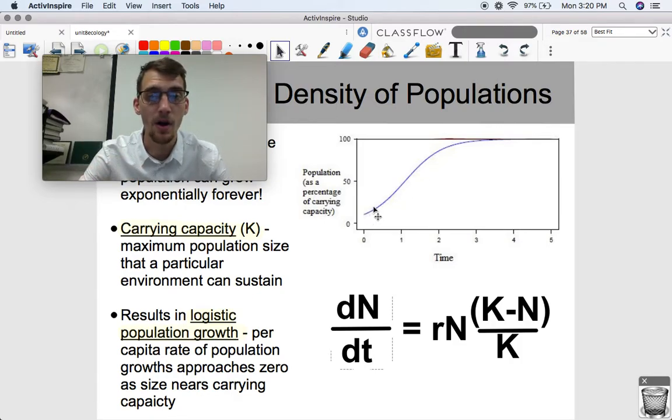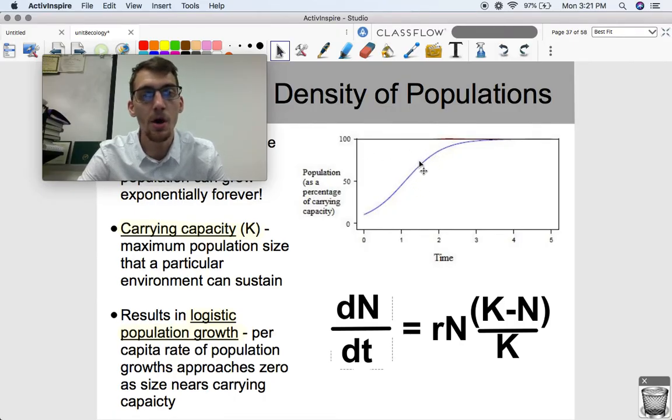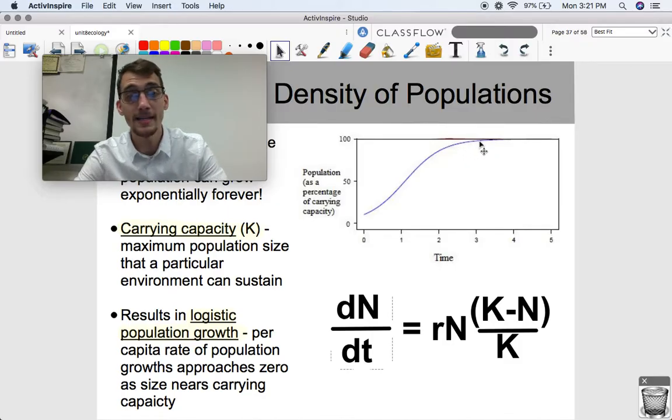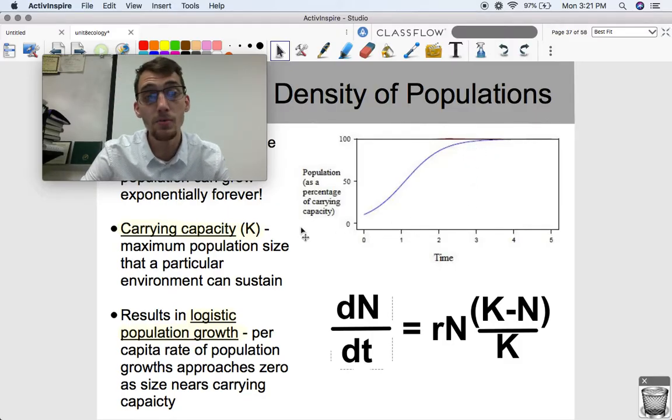So as we can see, it starts to grow really fast, maybe exponentially. And then as it approaches this line up here, the line of 100 individuals, it starts to slow and level off as it approaches that line. And this can actually be represented mathematically as well.